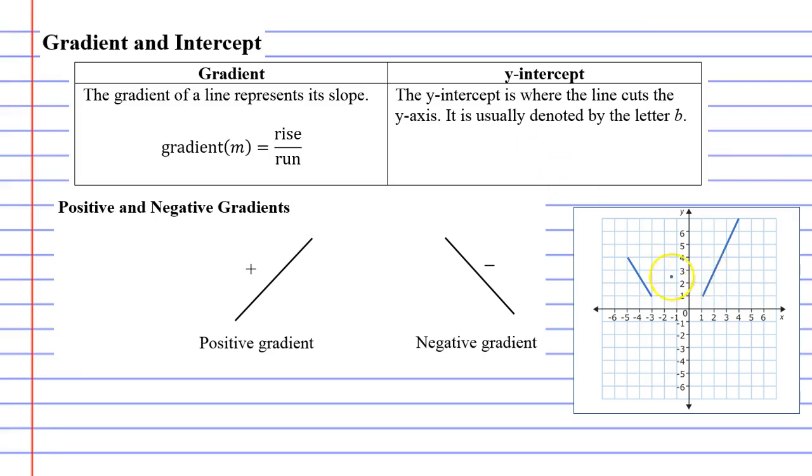So we'll start by calculating the gradient of these two lines I've given you and to start with we'll draw two little dots, one at the start and one at the end of the line. Do it for both of them and when you find gradient it really helps if you can construct a right angle triangle.